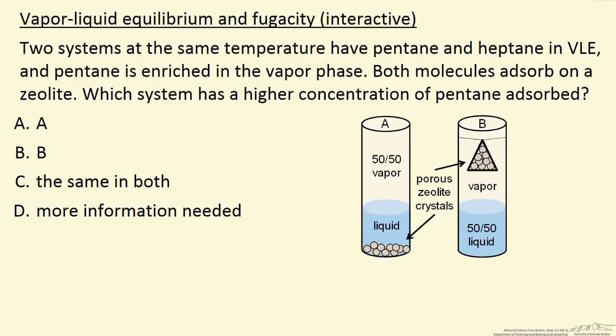We have two systems, each is in vapor-liquid equilibrium, each contains a zeolite. In one case the zeolite is in the liquid phase, in the other case the same zeolite is in the vapor phase. In system A, the vapor is 50% of each component.